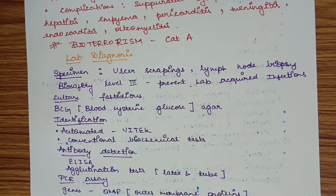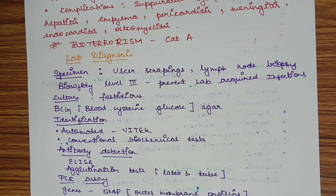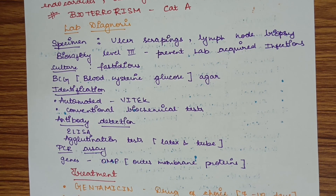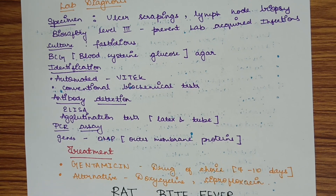Since Francisella tularensis is a fastidious organism, it grows on very few culture media; one that can be used is BCG agar, blood-cysteine and glucose agar. Identification can be by automated methods or conventional biochemical tests. Antibody detection can be done by ELISA or agglutination tests, including latex and tube agglutination. PCR assay can also be done to detect genes including OMP genes, which are outer membrane protein genes.